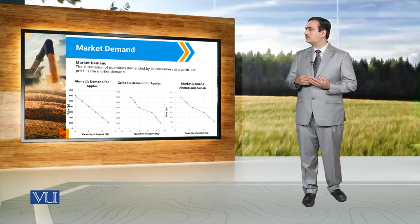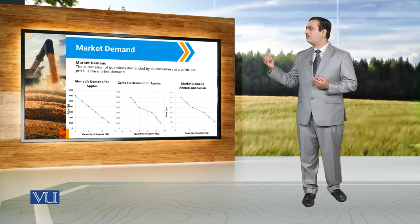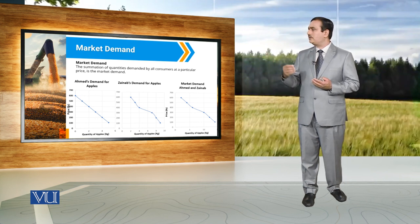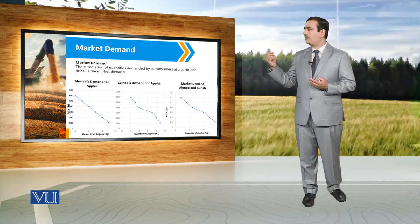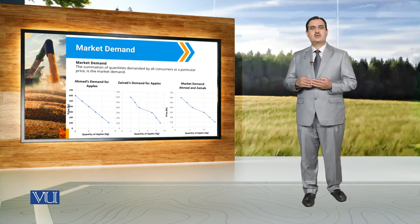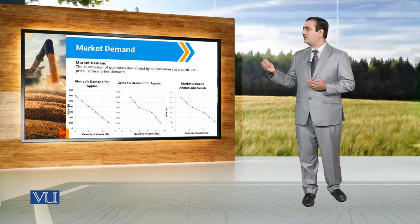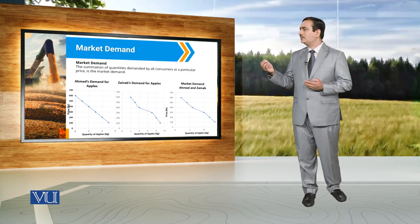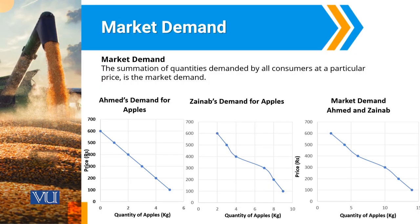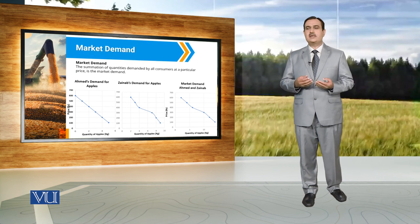If we look at the demand by Ahmad in the first part of the diagram, we can see again there is a negative association between price and quantity demand of apples. But for Ahmad, if price is 600 rupees, Ahmad is not willing to buy any unit of apples. But when we look at the demand of apples by Zainab, we can observe that if price is equal to 600 rupees, then Zainab is able to buy two units of apples. So by aggregating demand by Ahmad and Zainab, if price is equal to 600 rupees, we can report market demand.